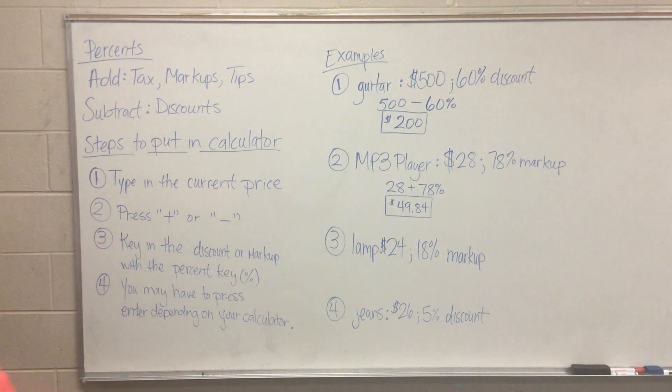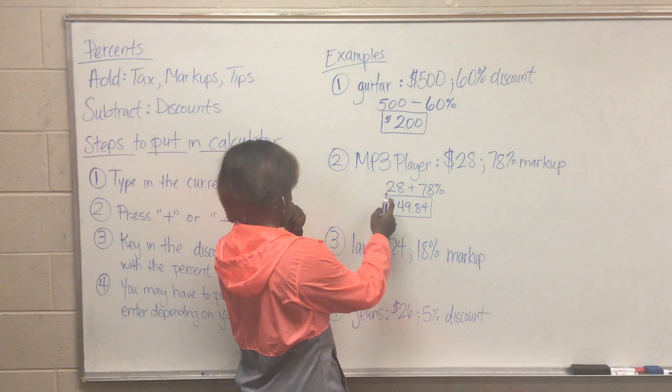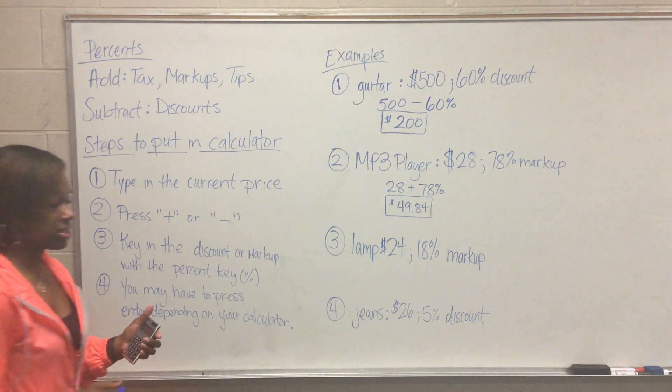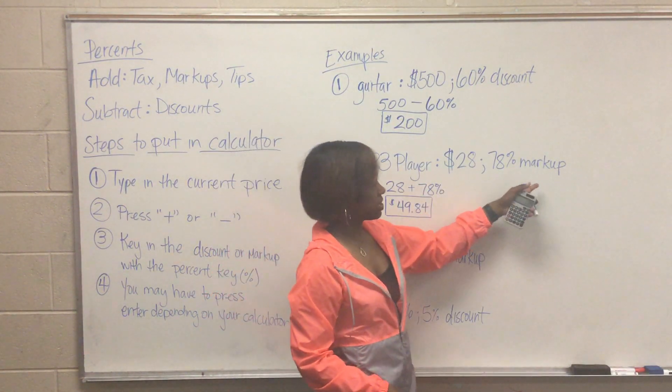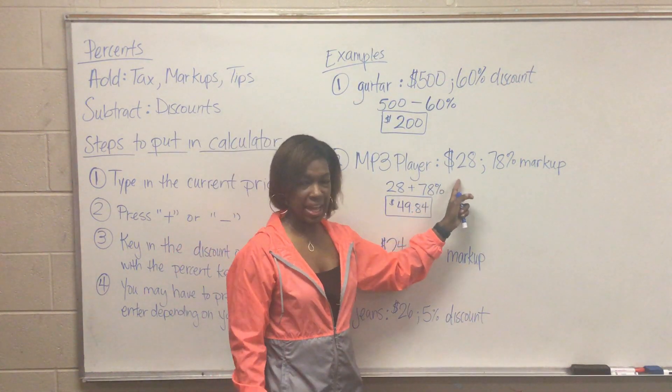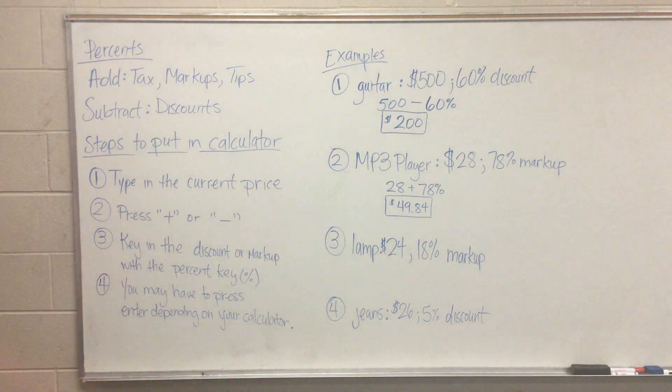So I want you to try number three and number four. And before you try number four, if you got 21.84 when you did 28 plus 78%, you will also have to press enter. And reason being, if the MP3 player costs $28 and it is a 78% markup, if my answer is less than what I started with I know something's not right. If it's a markup your price should go up. So now try number three and number four. You can pause it at this time.